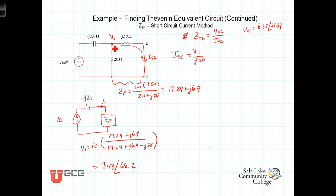That's V1. We need I short circuit. I short circuit is V1 divided by J50. Or I short circuit is equal to 7.43 angle 68.2 divided by J50, and that equals 0.149 angle negative 21.8. Finally, we've got the short circuit current.